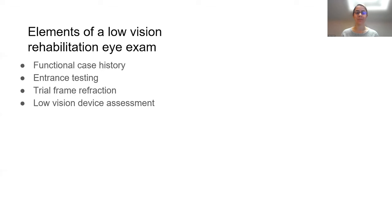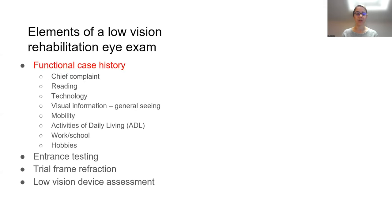During a low vision exam, we go through a number of different elements. First, we do a functional case history where we pick up on different functional complaints related to mobility concerns and difficulty bumping into things. We get a chief complaint to find out exactly what the patient hopes to get from their exam. We then ask about difficulty reading in quite some detail — whether they're having difficulty reading medication labels, books, newspapers, or food packaging — since each activity has different requirements and patient preferences.